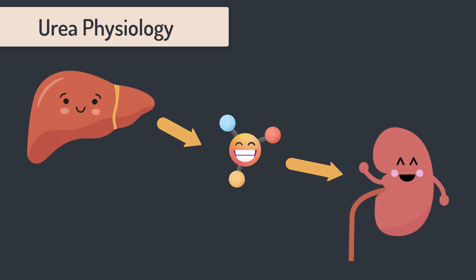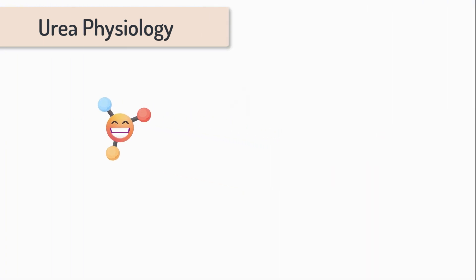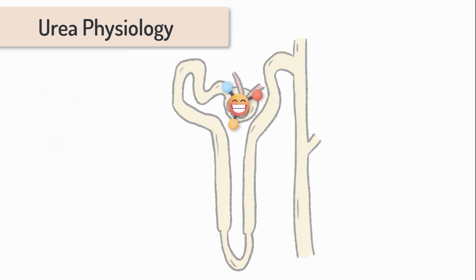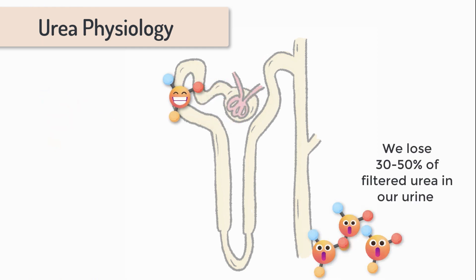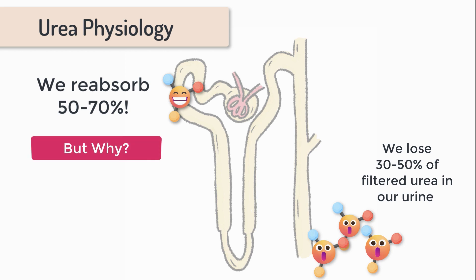Let's see how urea travels through the nephron. Urea is freely filtered into the proximal tubule. From there we lose 30 to 50 percent in our urine — so we're losing a fair bit of urea, but equally we're holding on to 50 to 70 percent of this molecule every time it goes through the nephron. So why on earth would we do that? And now we arrive at the concept of urea as not just a waste product, but as a molecule with some physiological purpose.